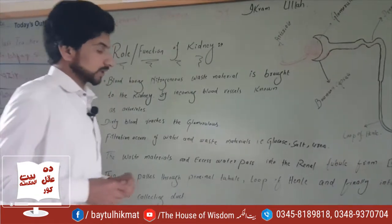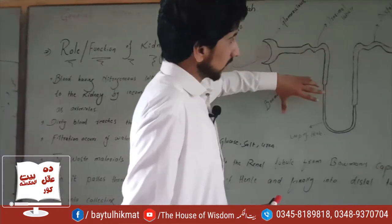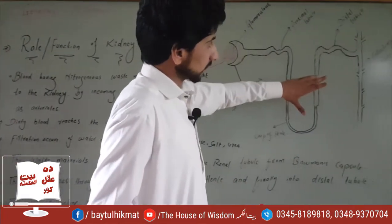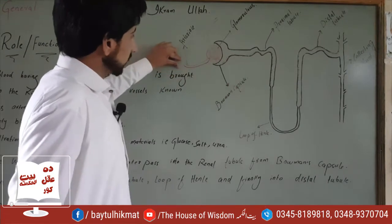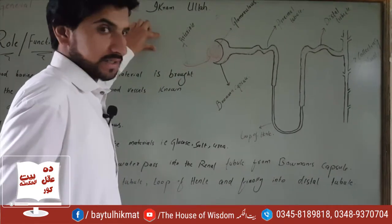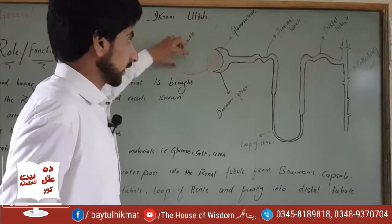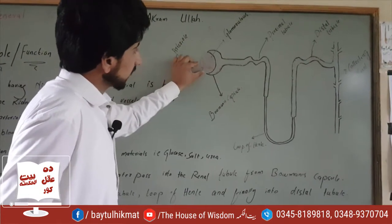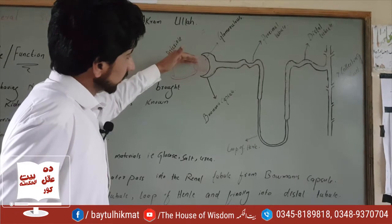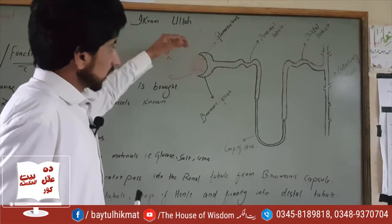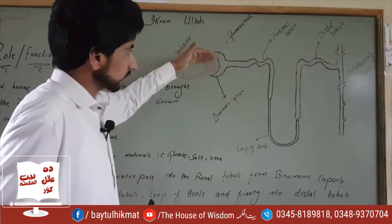We have discussed the front diagram on the front diagram. We have to review this. The renal artery is the artery. There is one artery that has not been blocked. When the blood cells increase, we have to review it as well.